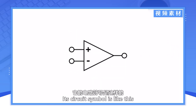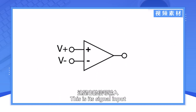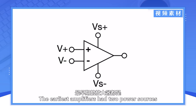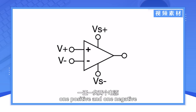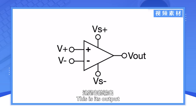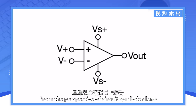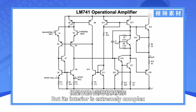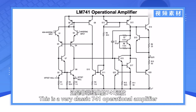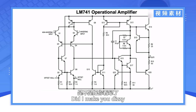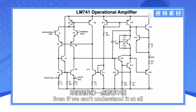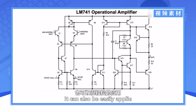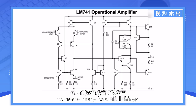Its circuit symbol is like this. This is its signal input. This is the power supply. The earliest amplifier had two power sources, one positive and one negative. This is its output. From the perspective of circuit symbols alone, this seems very simple, but its interior is extremely complex. This is a very classic 741 operational amplifier. Even if we can't understand it at all, it can also be easily applied to create many beautiful things.